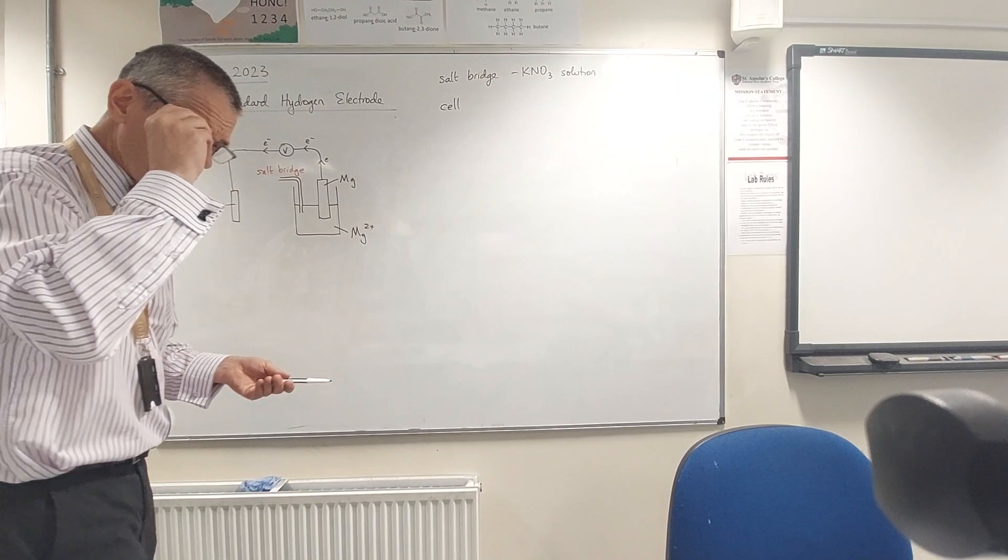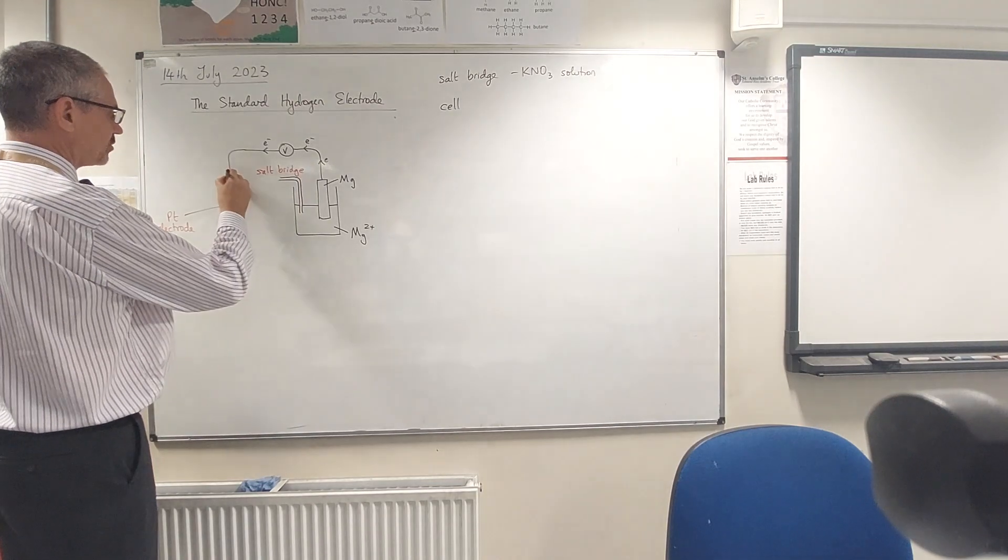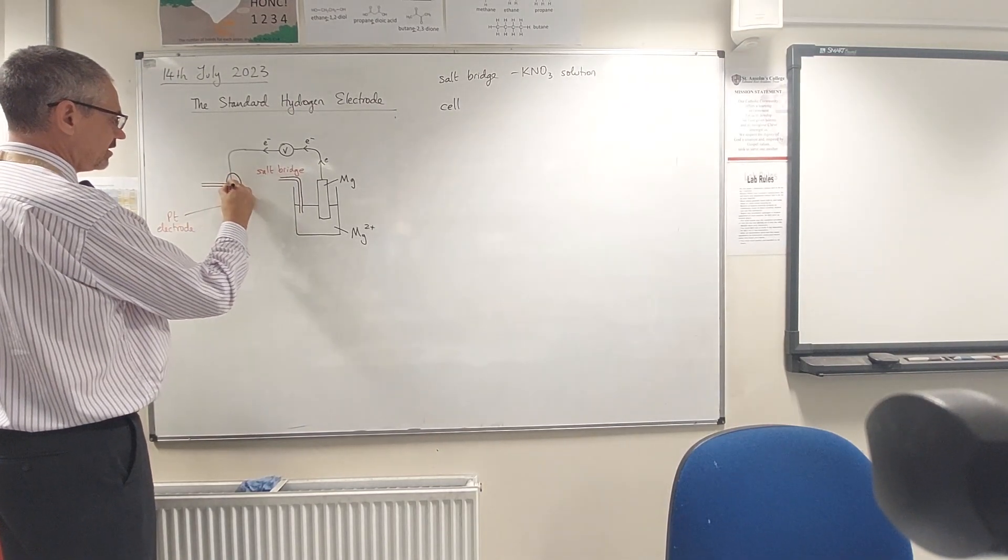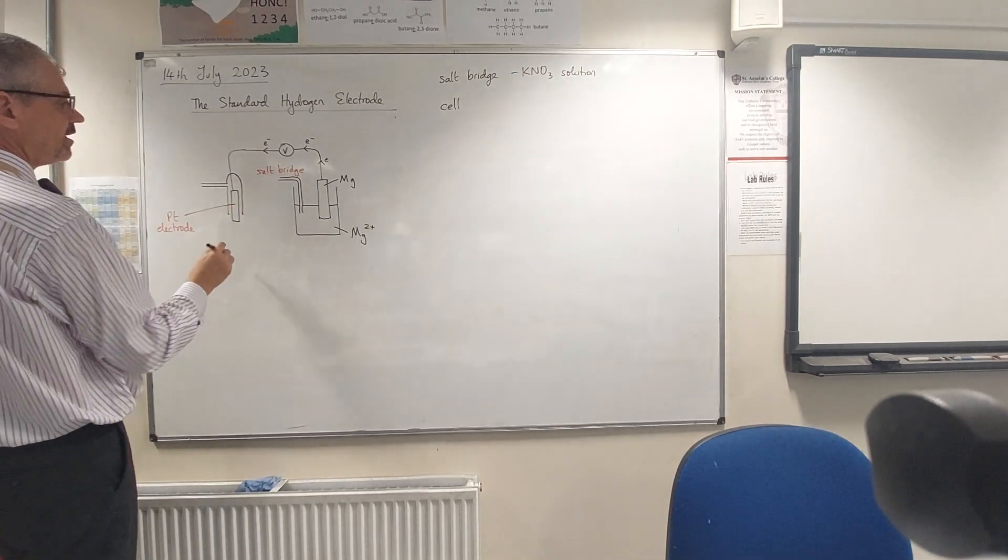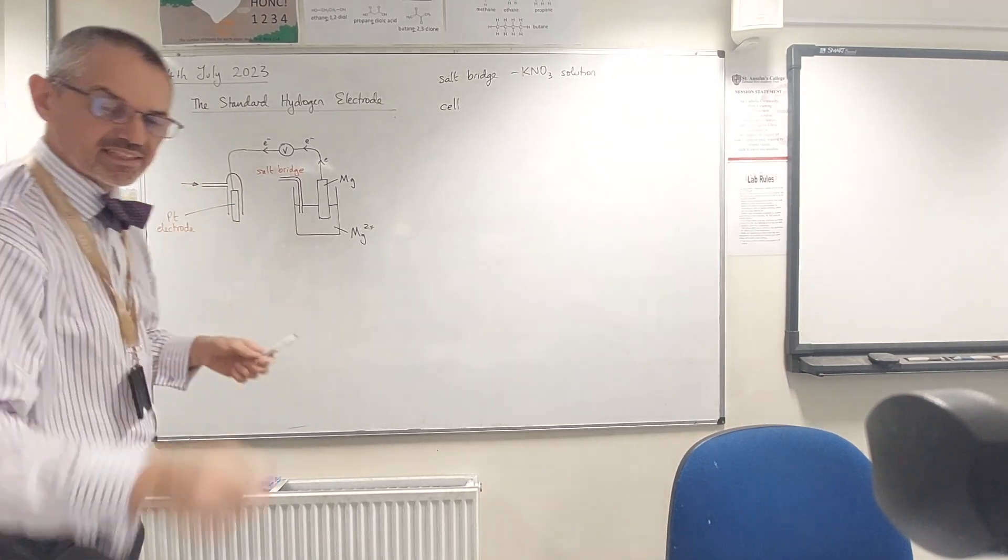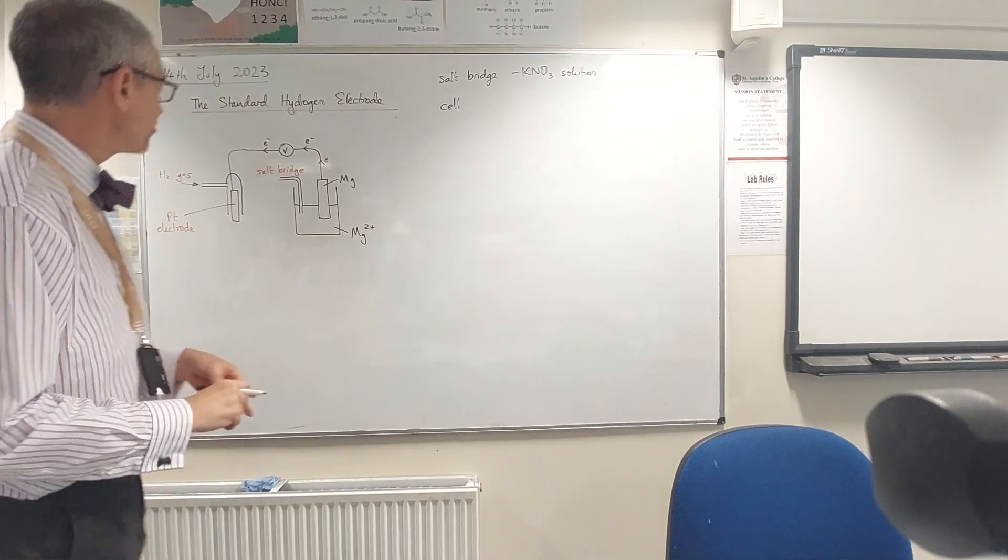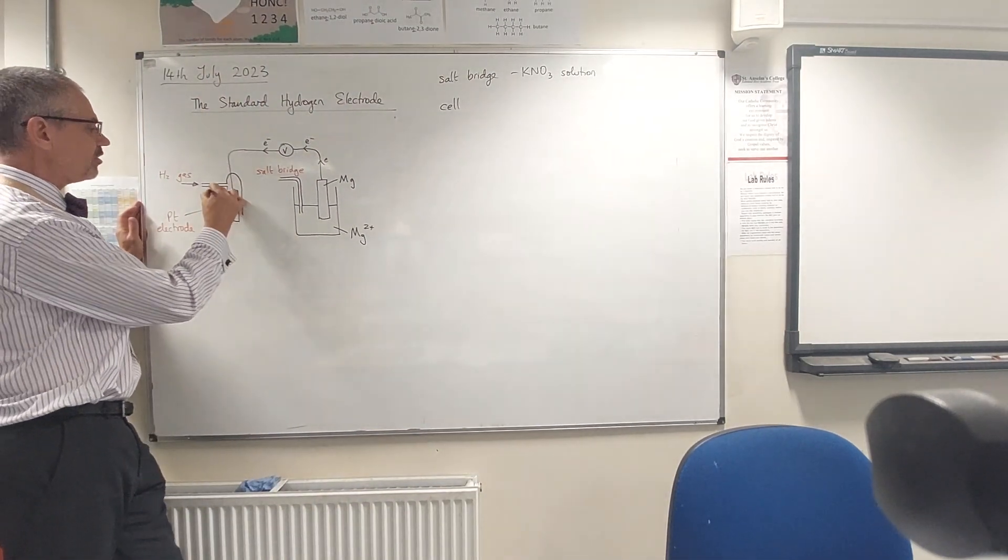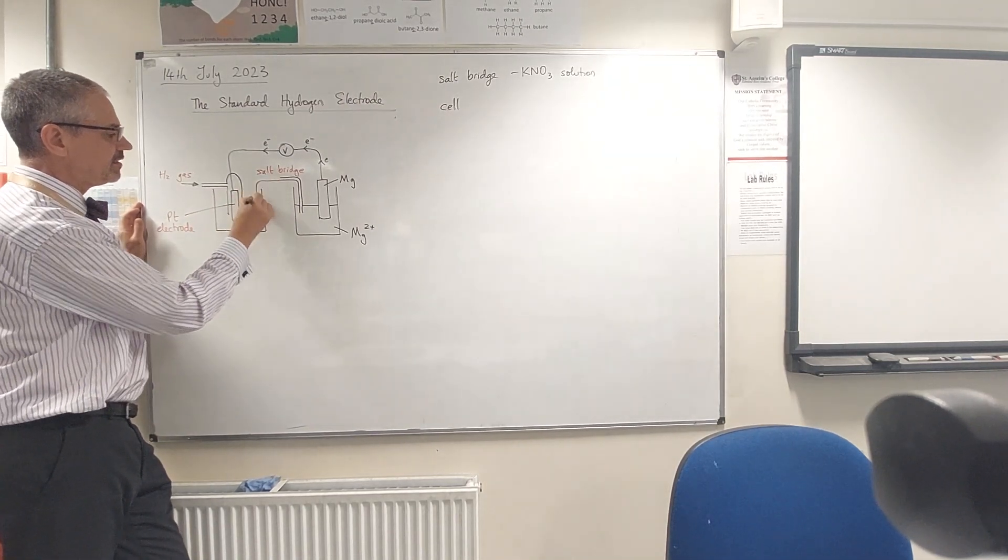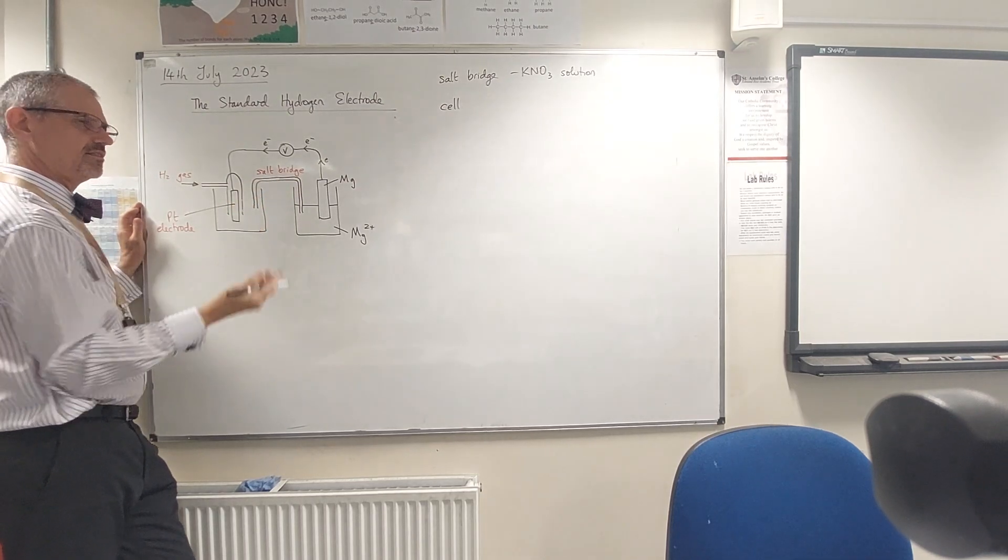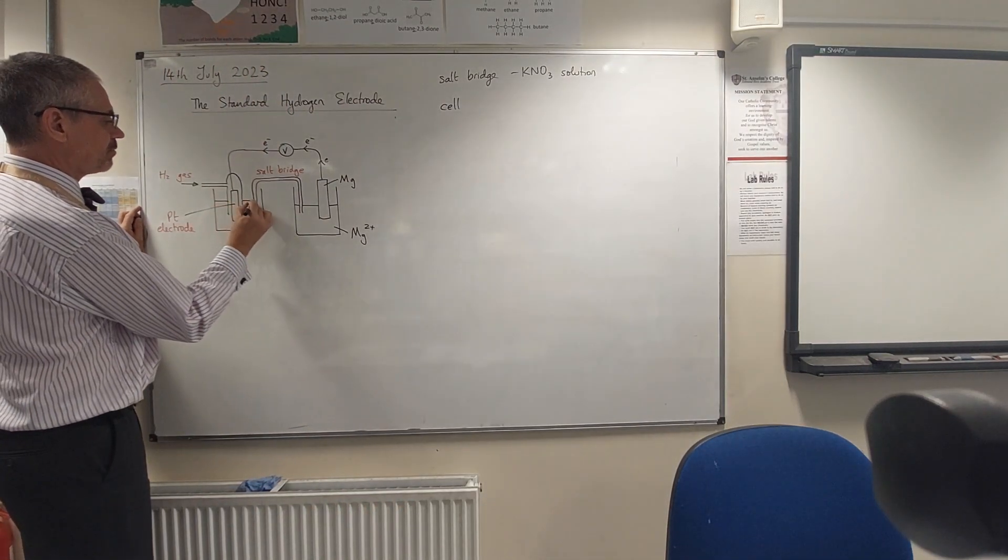So there's our platinum electrode. We need to have hydrogen passing over that, so we have a clever little container here which passes down over the platinum. Then we pipe into that our hydrogen gas so we have a constant flow of hydrogen gas coming over our platinum electrode. Then we dunk all of that into a beaker containing hydrogen ions.